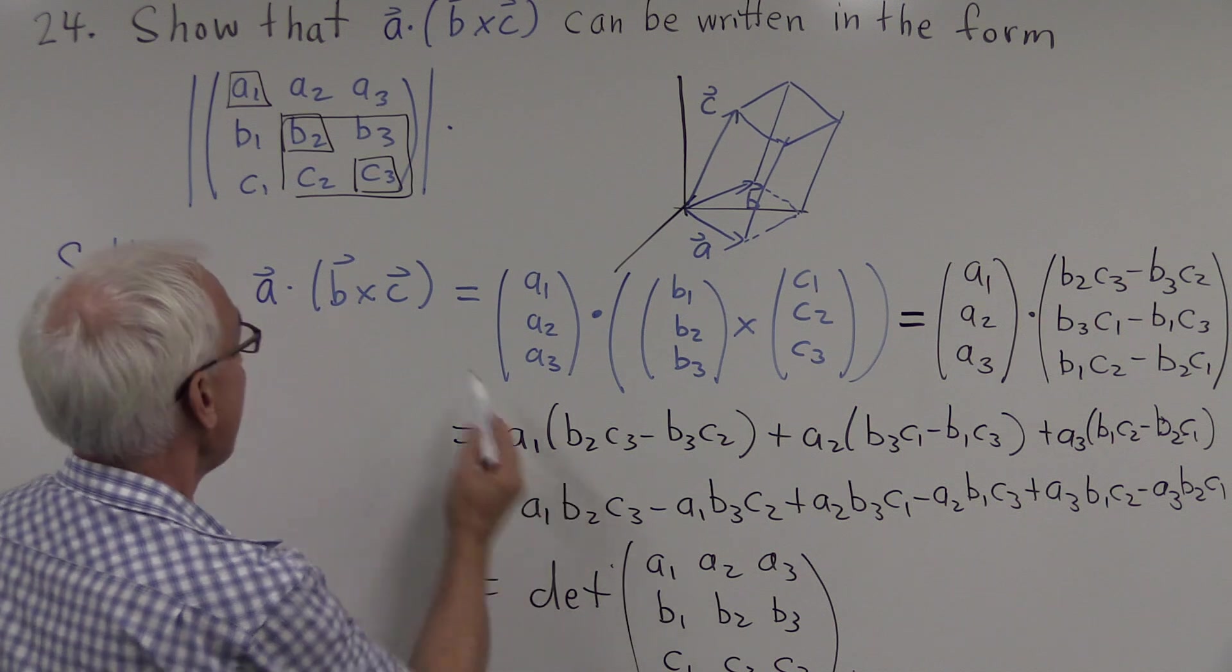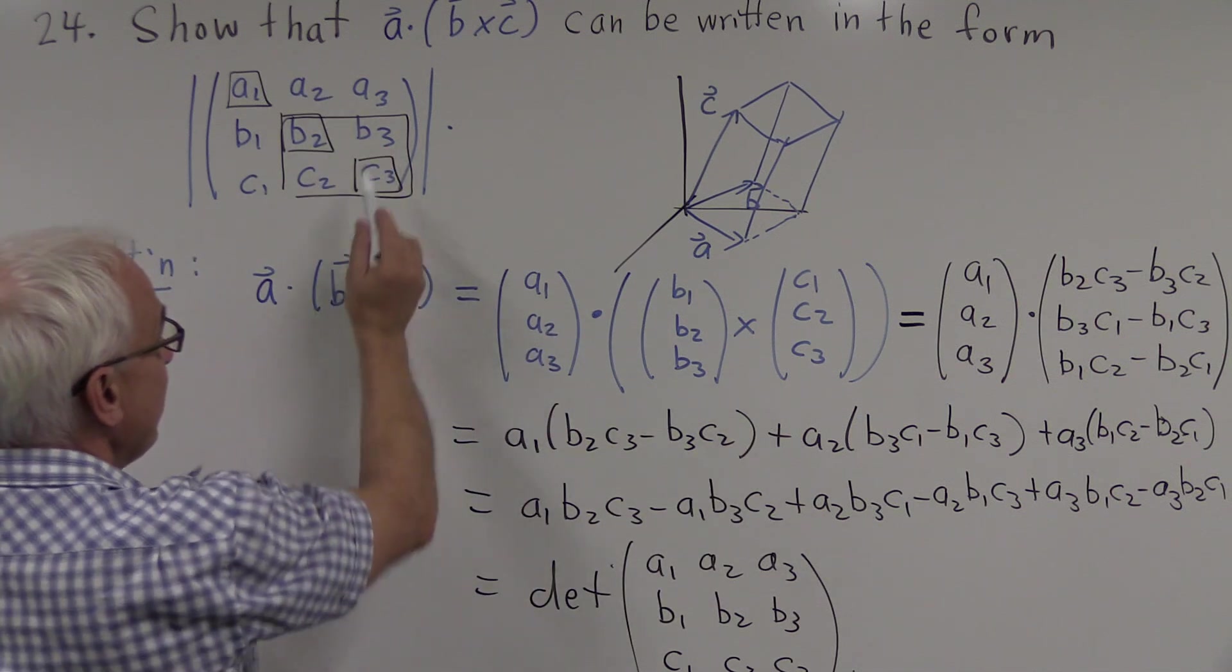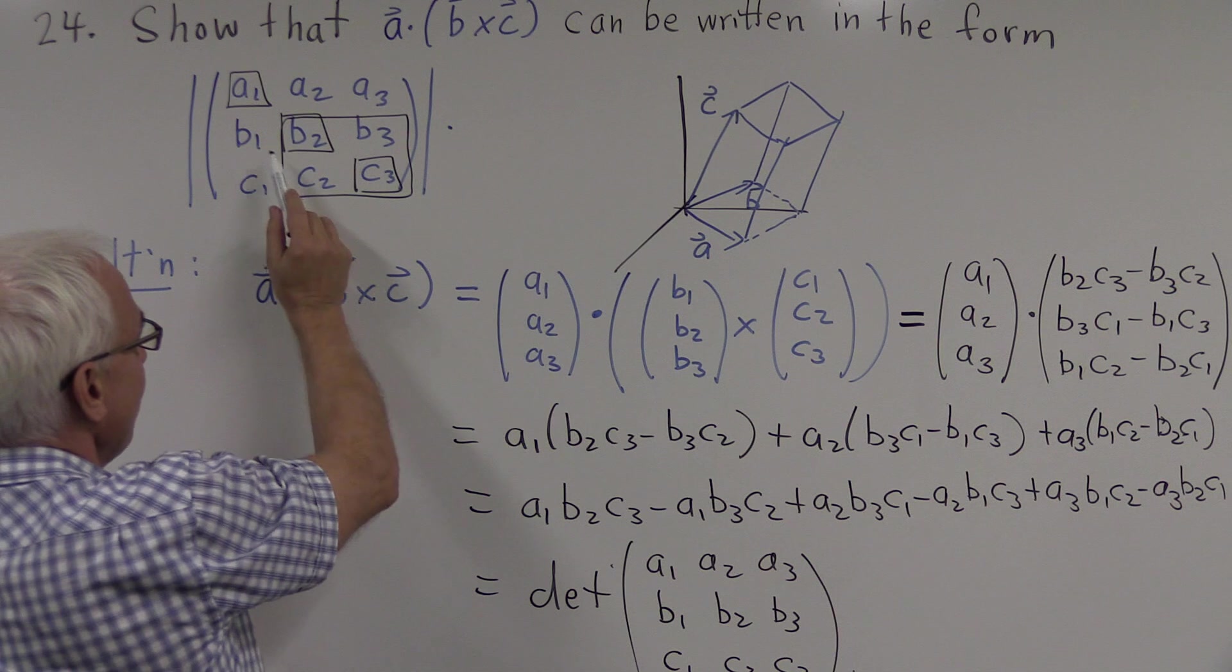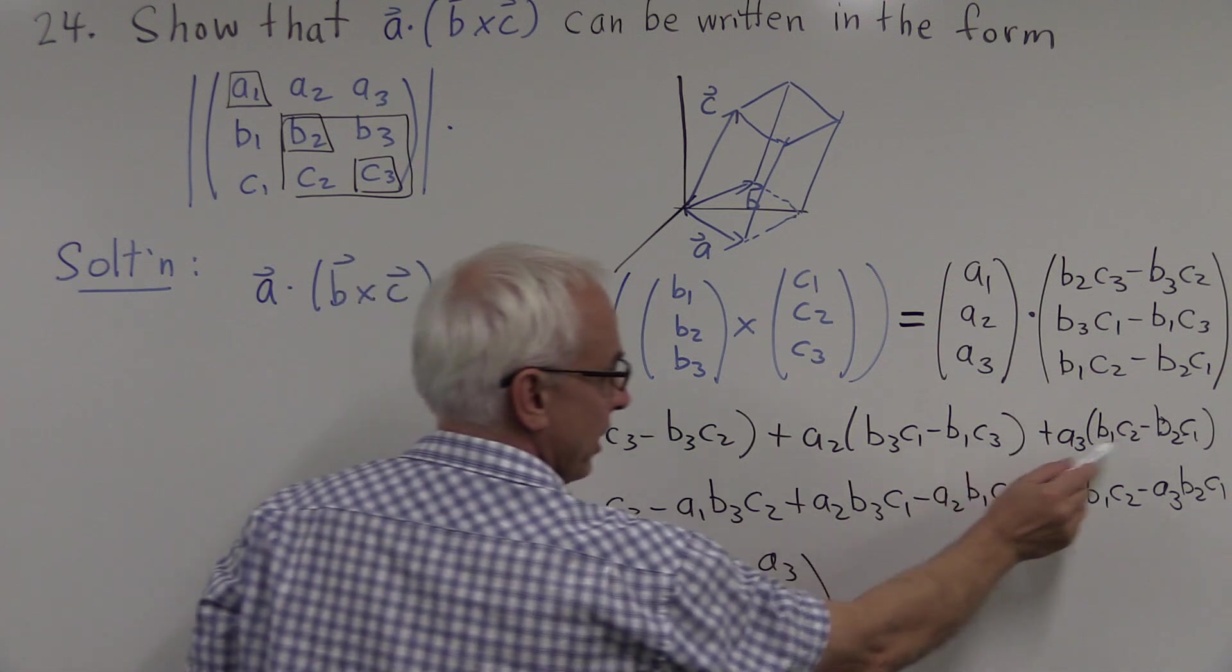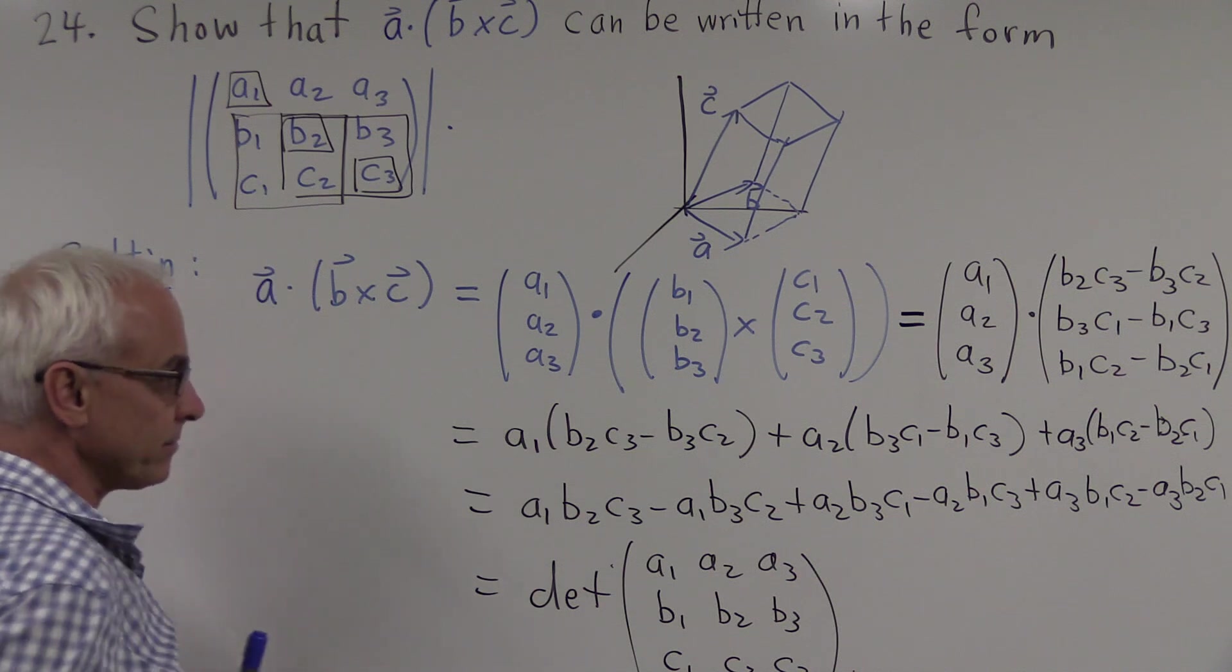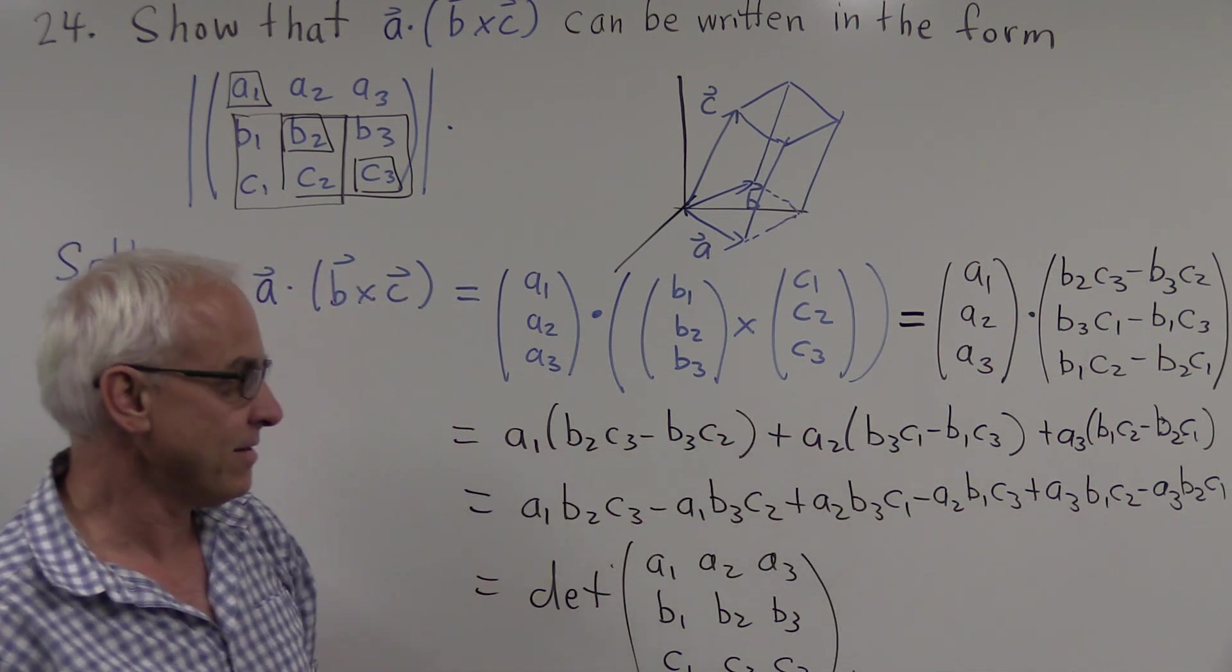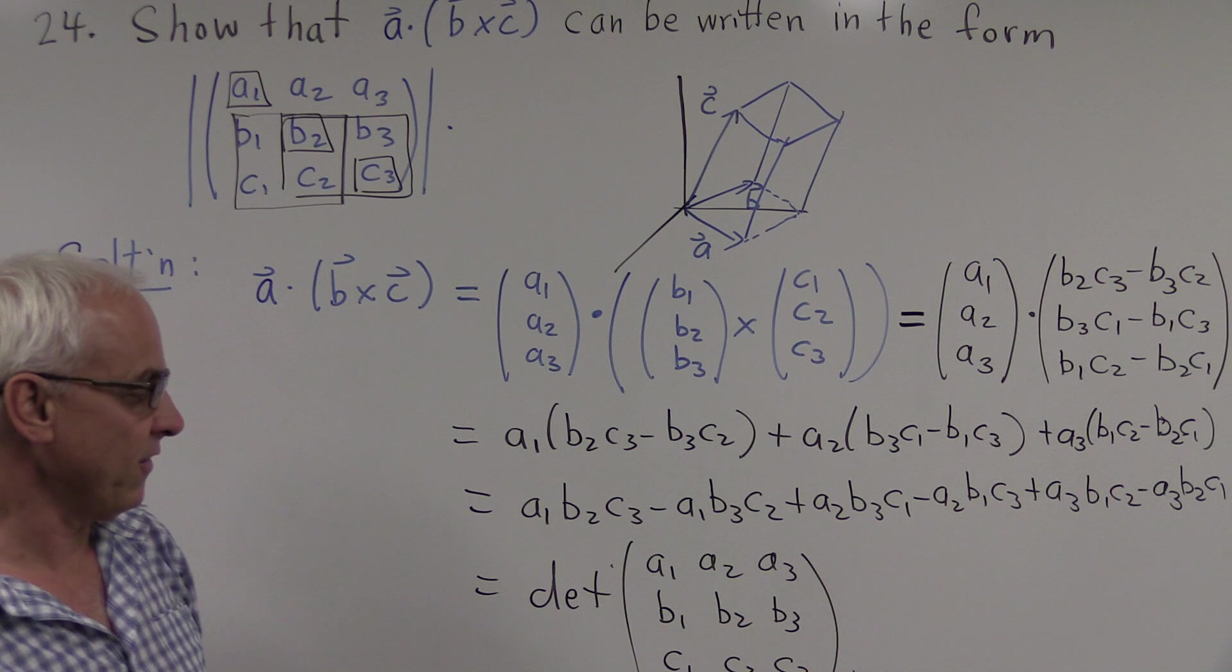So here we have a1 times this 2 by 2 determinant, you can see that right there, plus a2 times this 2 by 2 determinant. And that means it's the same as minus a2 times this 2 by 2 determinant, the one that you get by eliminating the row and the column through a2. And this entry here is a3 times this 2 by 2 determinant. So if you know the expansion of the determinant along the first row, you could go right from this step here and recognize after you've changed the sign here and change the order of those two, that you're getting the determinant of this matrix.